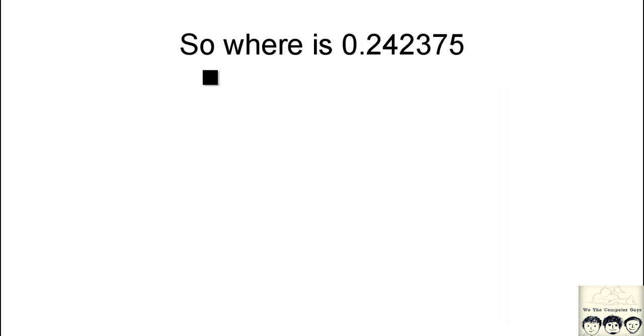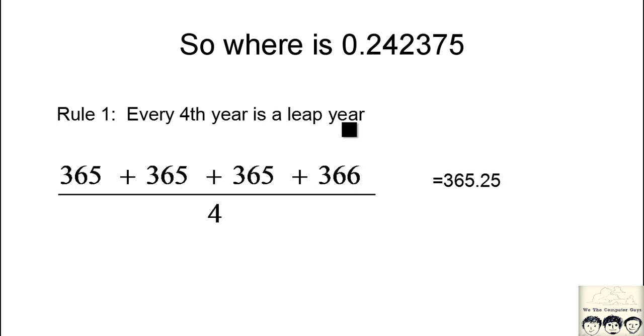So where is the 0.242375? They introduced a new rule saying that every fourth year is a leap year. According to this rule, if we calculate the average, it will result to 365.25 days for one year.